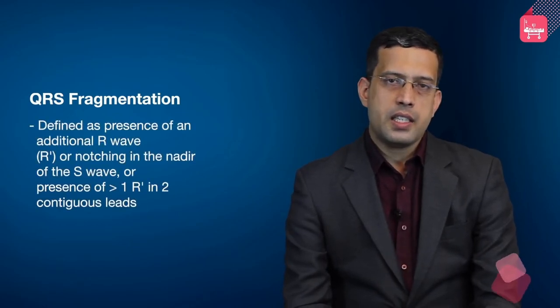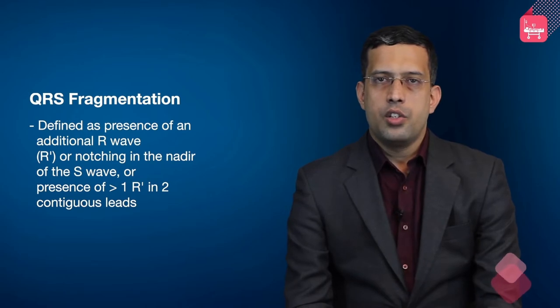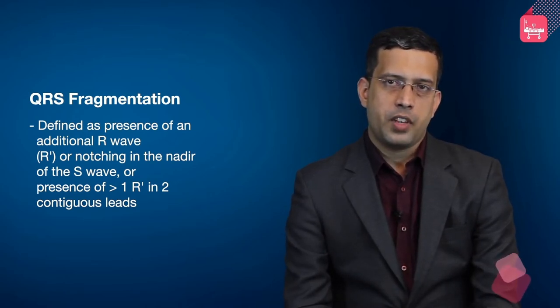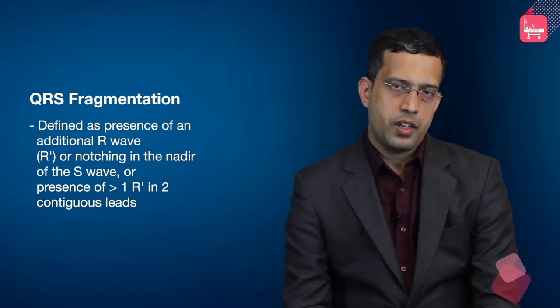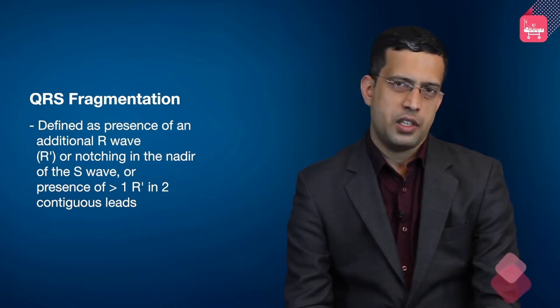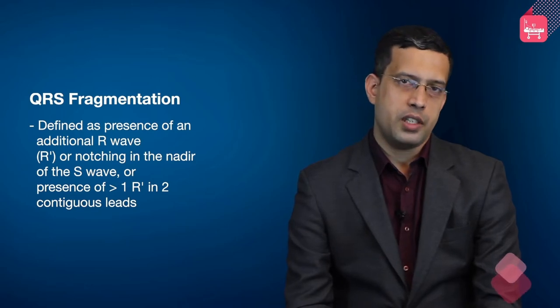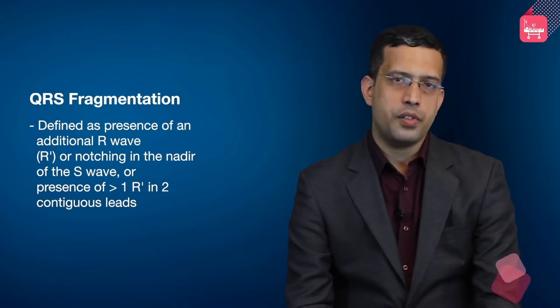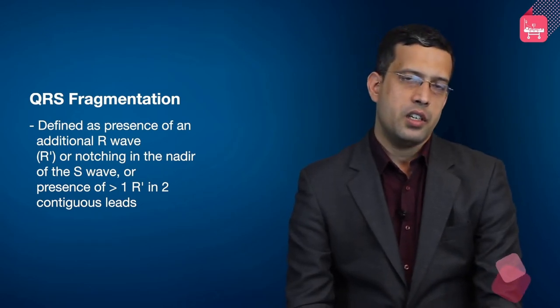QRS fragmentation is a fragmented appearance of the QRS complex. Criteria for significant QRS fragmentation include an additional R wave (R prime), notching in the nadir of the S wave, or presence of more than one R prime in at least two contiguous leads — meaning leads corresponding to a similar anatomic territory (e.g., two anterior leads, two inferior leads, or two lateral leads). Dissociated findings across territories do not satisfy this definition.